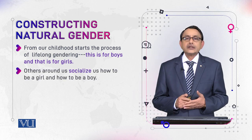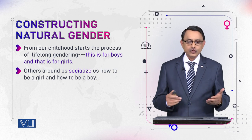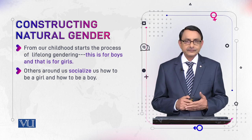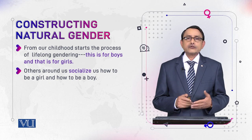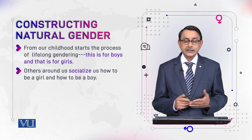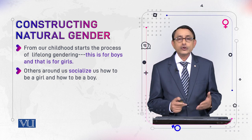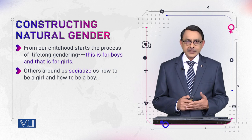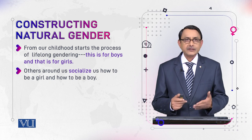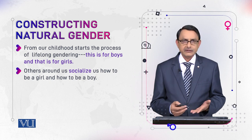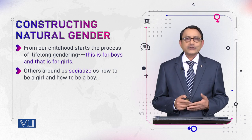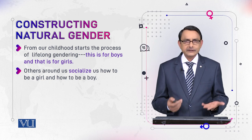Others around us socialize us — how to be a girl and how to be a boy. Socialization is a key term in sociology, language and gender, and sociolinguistics. It means knowing the proper way of doing, saying, and thinking that is acceptable in a society — the right way of doing things. Socialization also takes place through interaction, and interaction involves language.